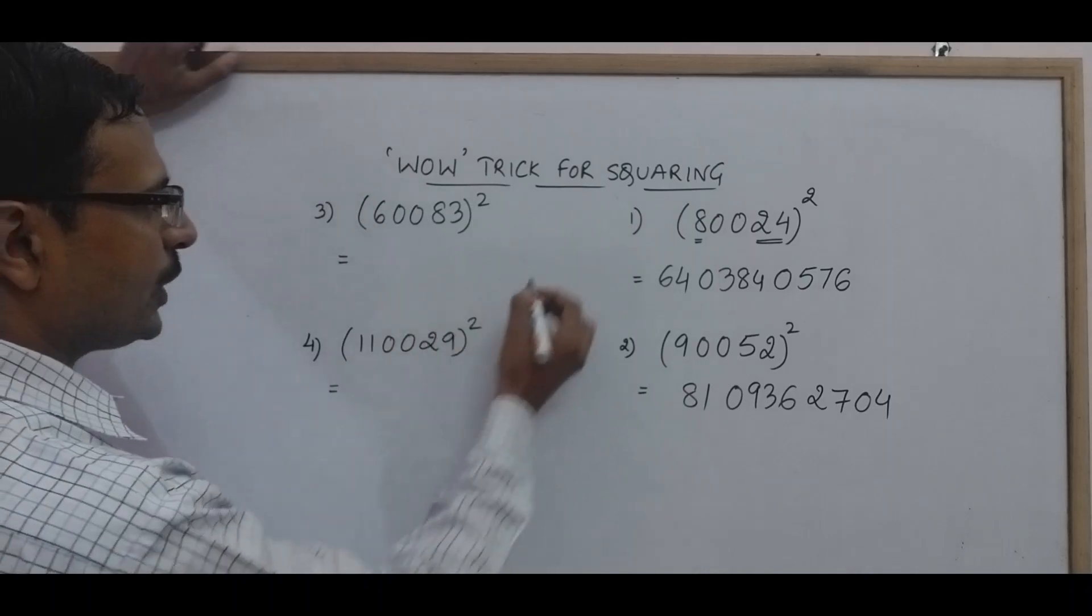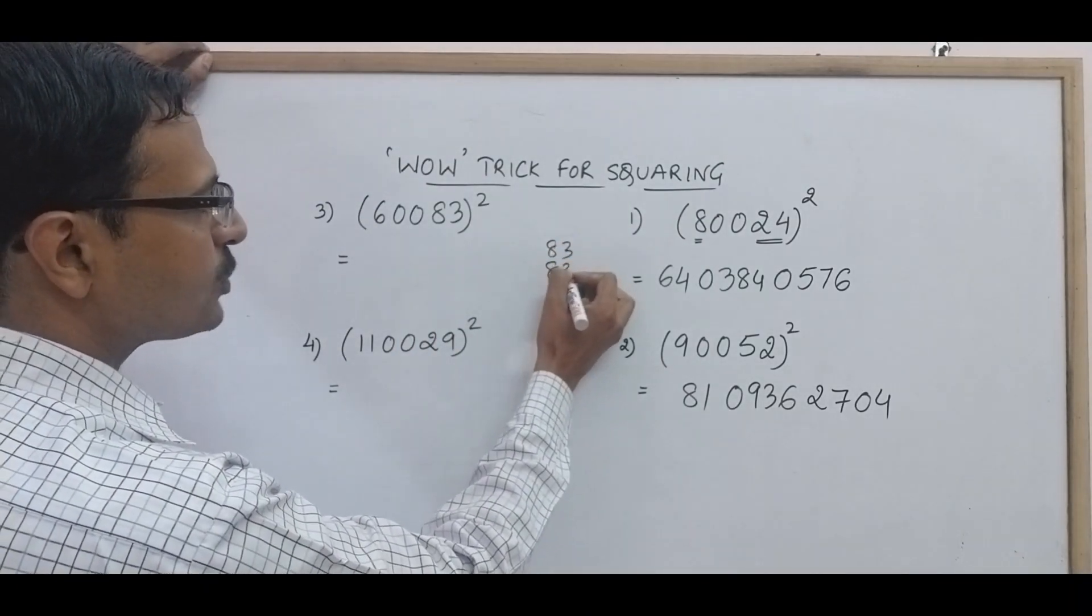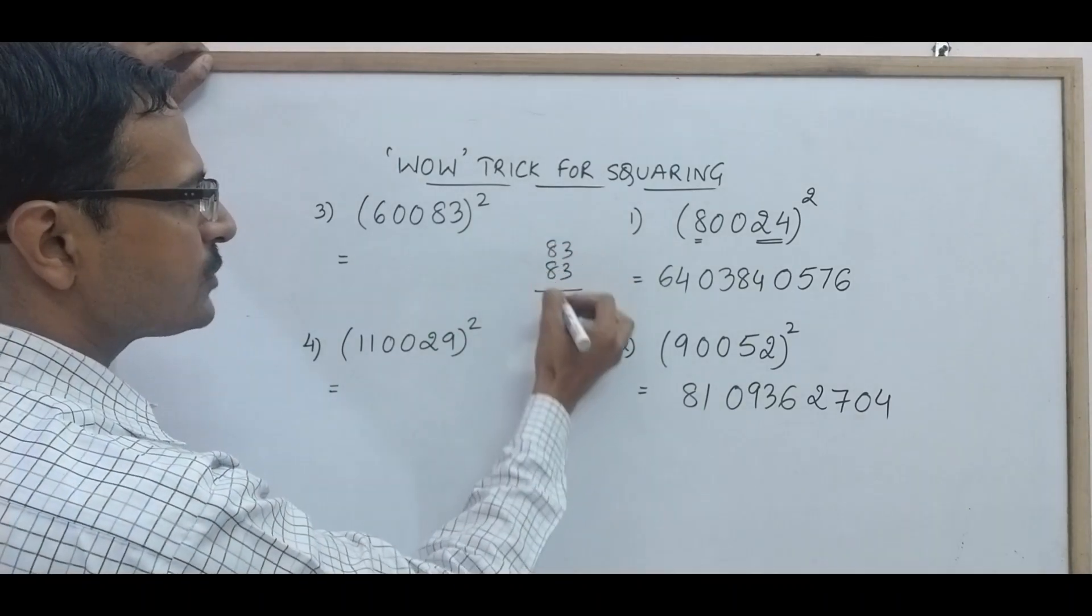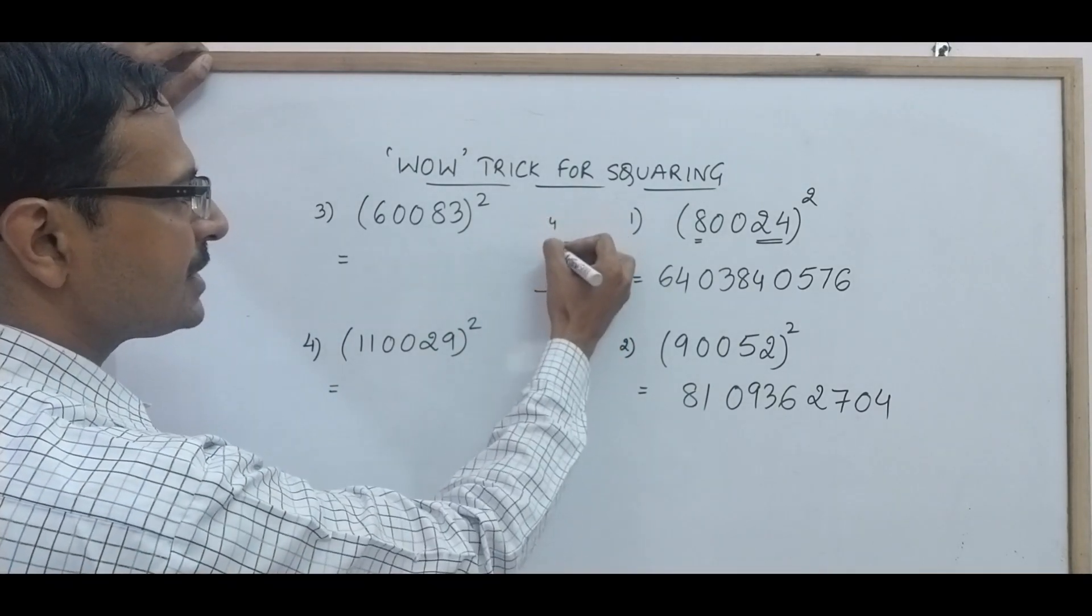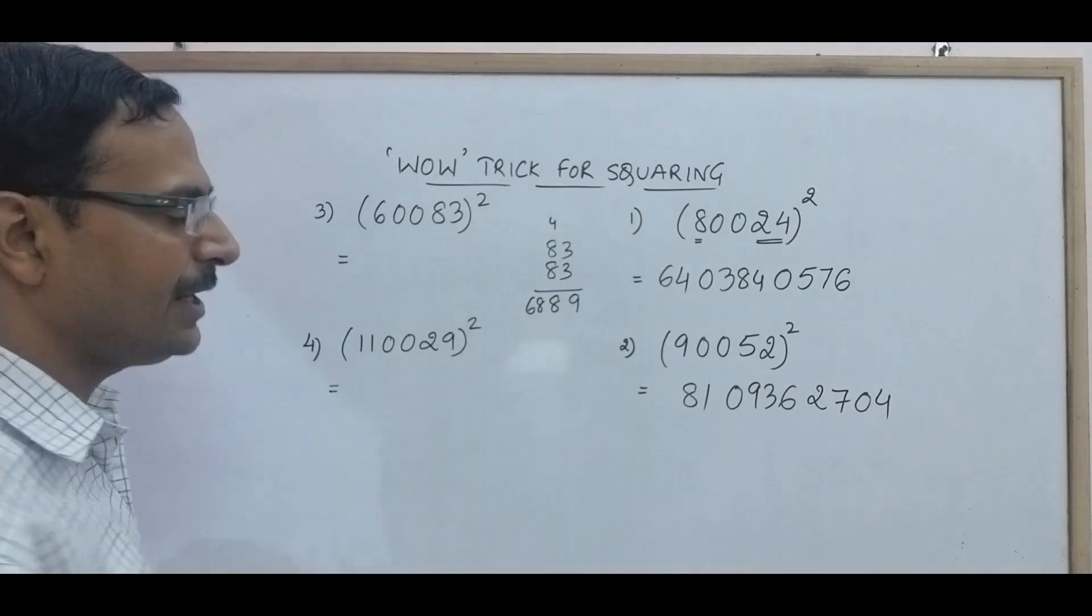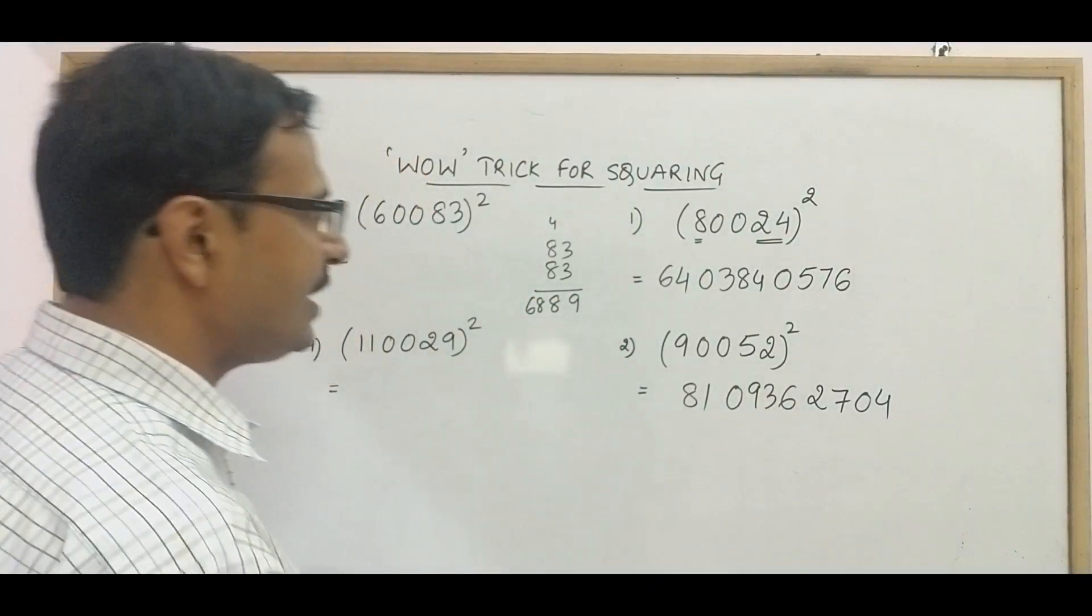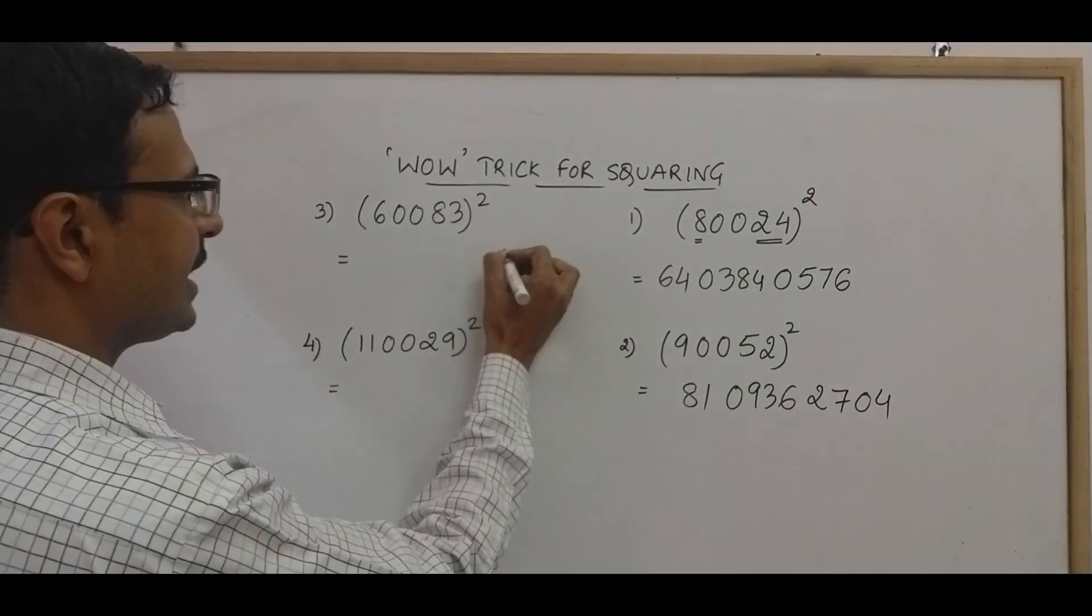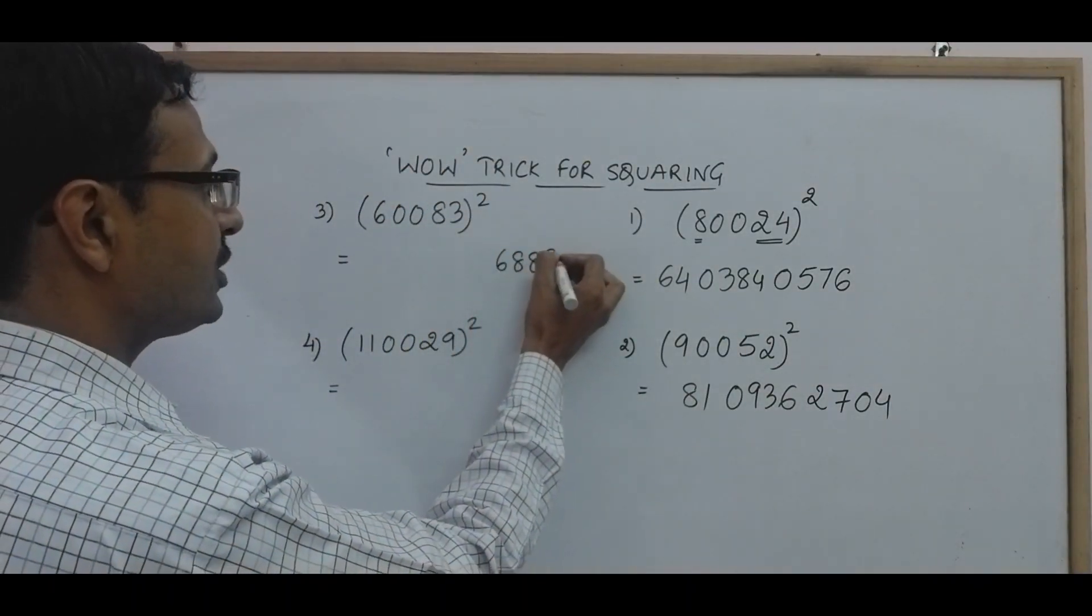See this one. Now 83. So 83 into 83, again I am using vertical and crosswise. 3 3s are 9, 24 and 24 is 48, 8 4 carry, 64 and 4 68. So 6 8 8 9 is the square of 83. So 6 8 8 9, I will just write 6 8 8 9 as the last 4 digits because I need 4 digit number.